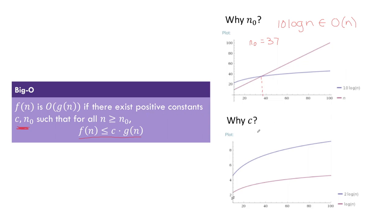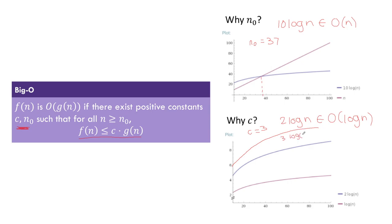The second question is: why is c important? Let's say we're trying to show that 2 log n is O(log n). If we plot these two functions, 2 log n is always greater than log n. But with our big O definition, we can scale the g(n) term by some positive constant. If we pick c equals 3, then 3 log n is always greater than 2 log n, making our big O expression true for any positive values of n.